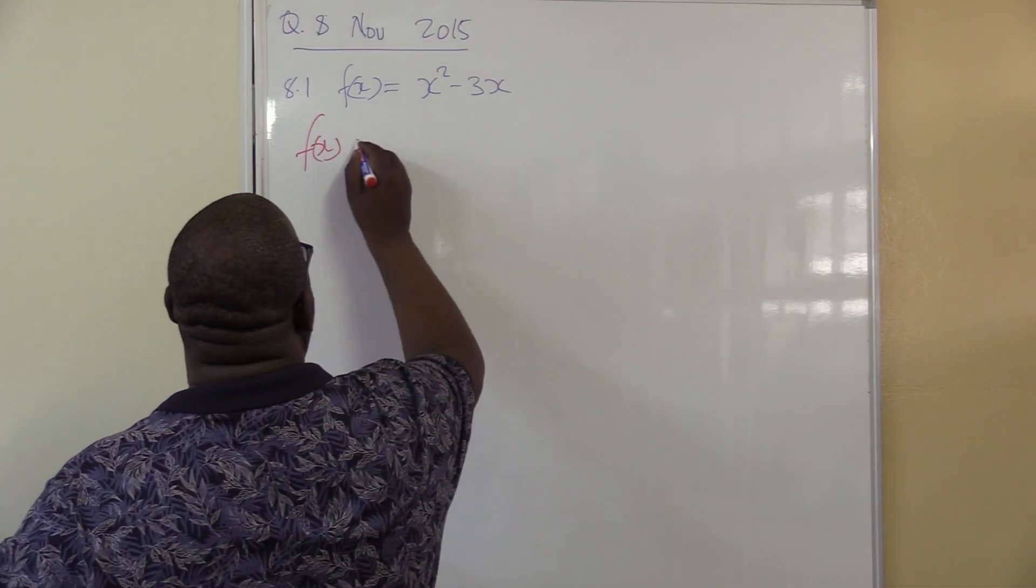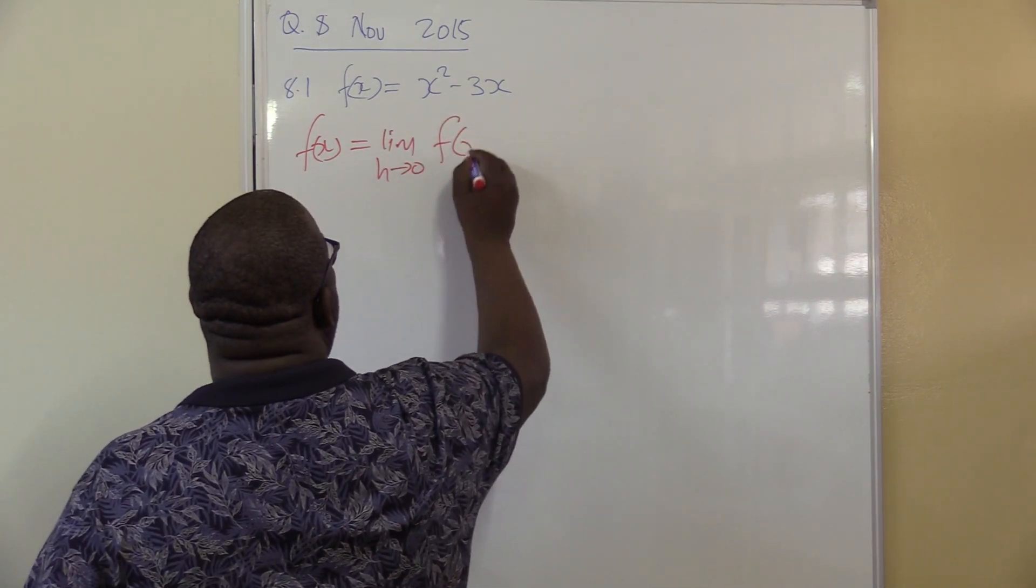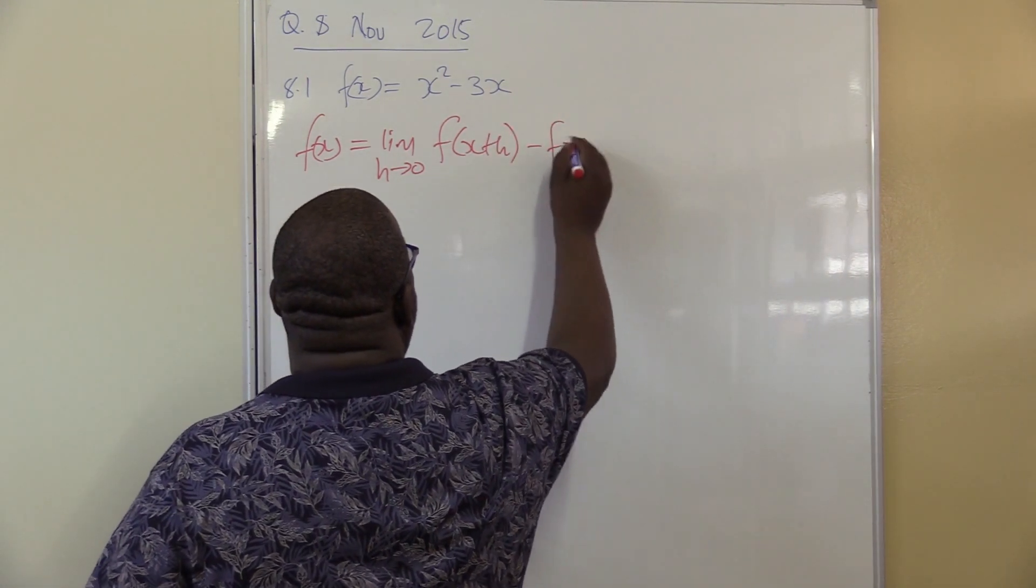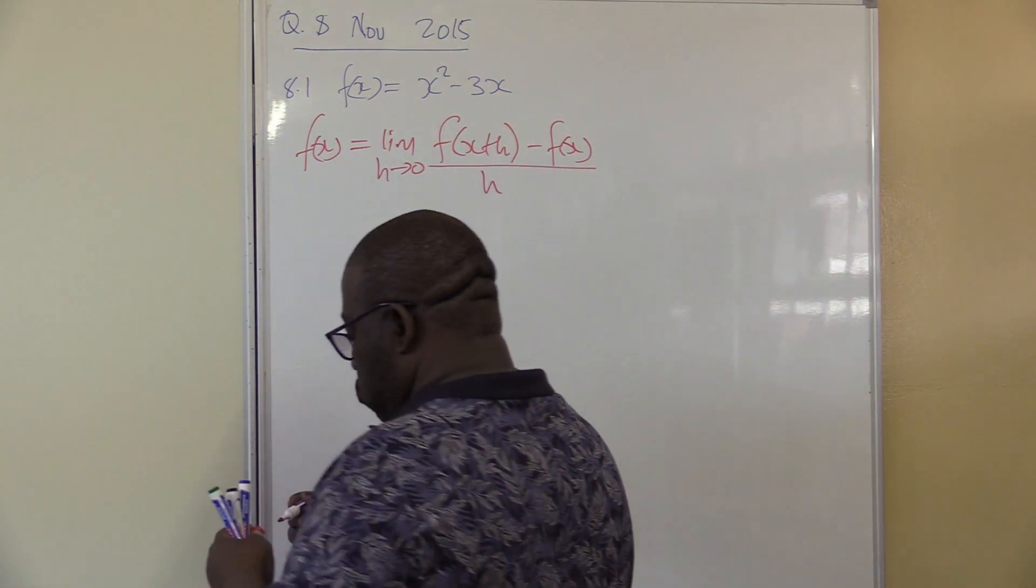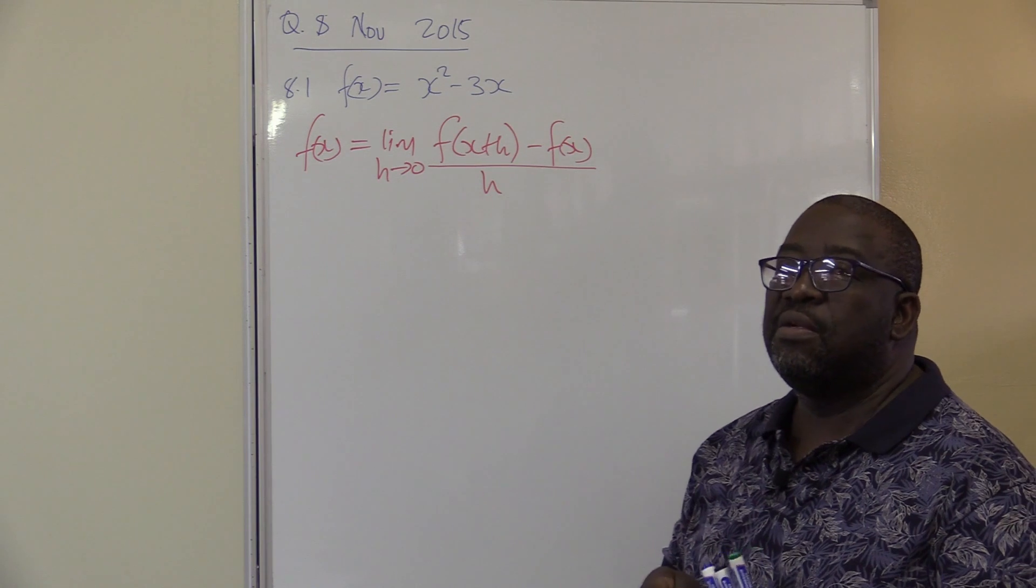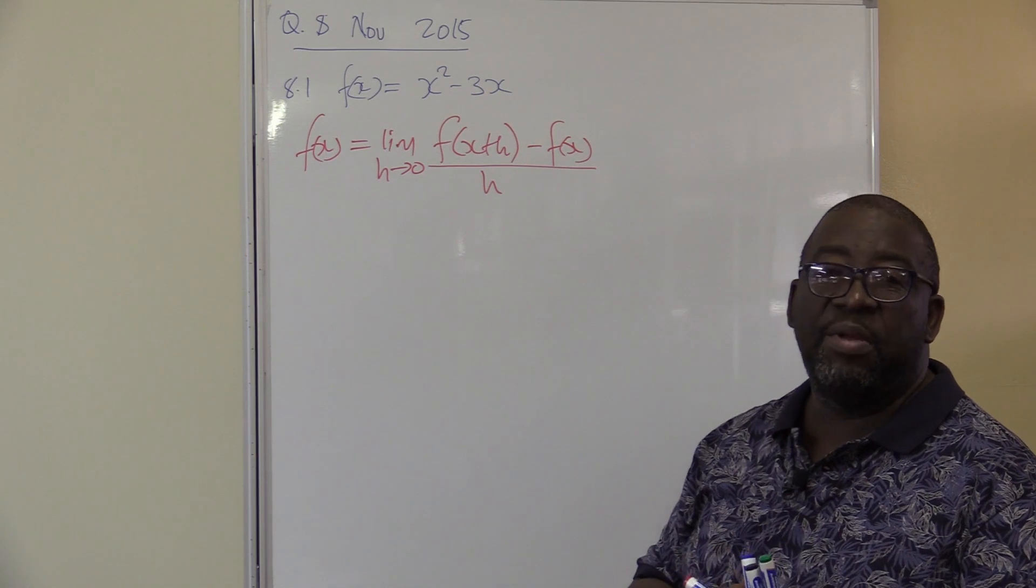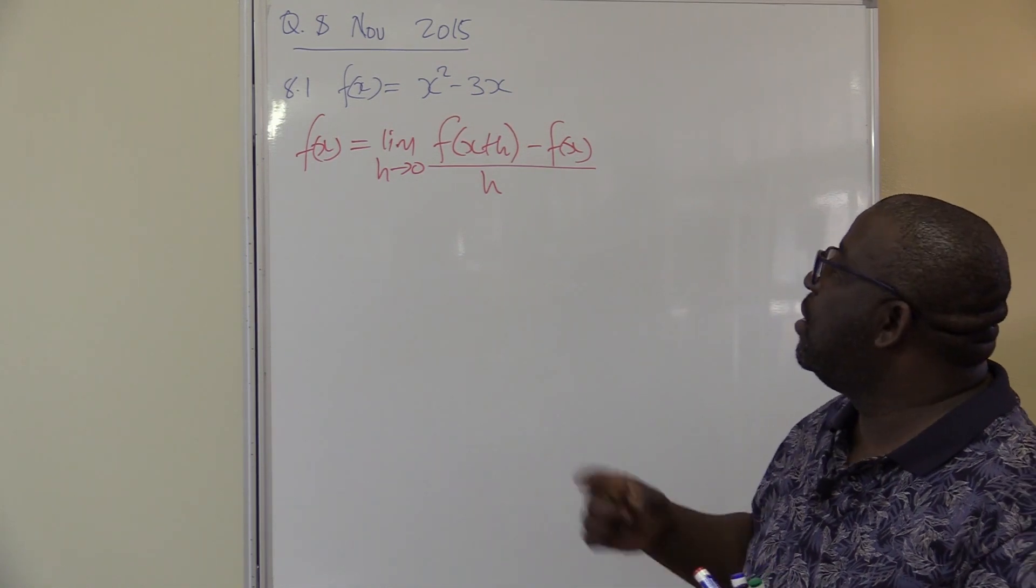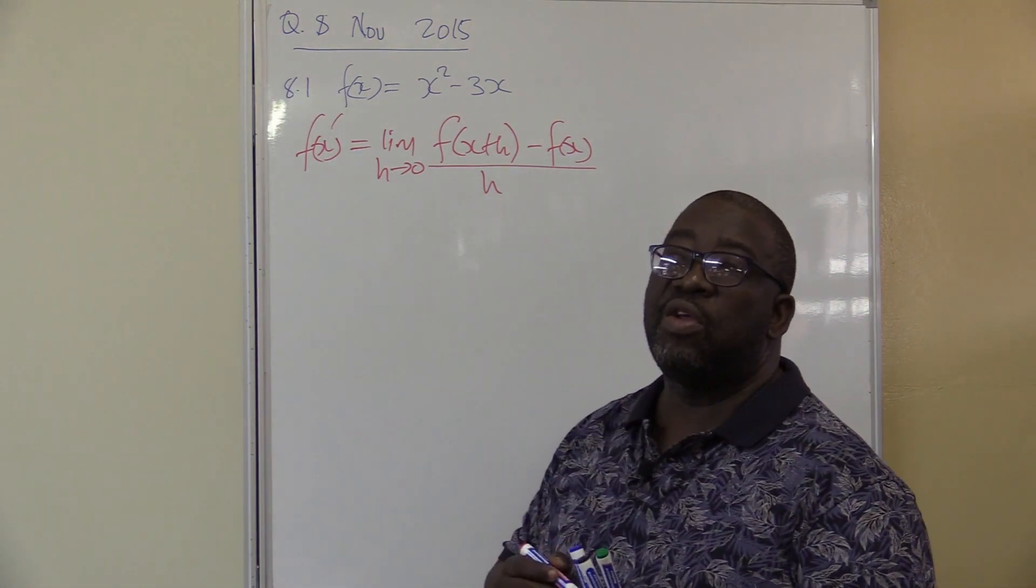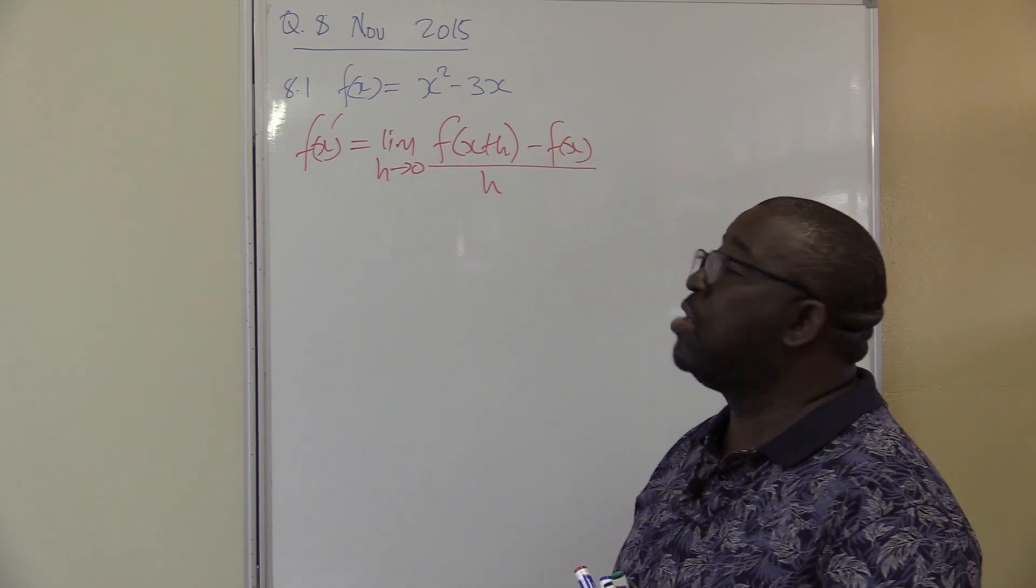f of x is equals to the limit as h approaches 0 of f of x plus h minus f of x. This is all over h. I've deliberately written a formula like that. And as soon as I write it, you must be able to pick up what is wrong with that formula. This formula is not indicating that I'm looking for the derivative or the gradient. So if you don't have that prime, then the formula is wrong. Make sure that you copy the correct formula.